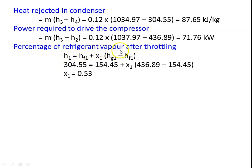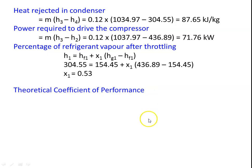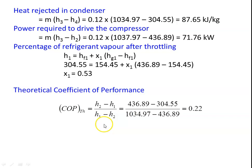The percentage of refrigerant vapor after throttling: H1 is wet vapor, so H1 = HF1 + X1 × (HG1 - HF1). Substituting: 304.55 = 154.45 + X1 × (436.89 - 154.45), giving X1 = 0.53. So the percentage of refrigerant vapor after throttling is 53%. Theoretical COP = (H2 - H1) / (H3 - H2) = (436.89 - 304.55) / (1034.97 - 436.89) = 0.22.